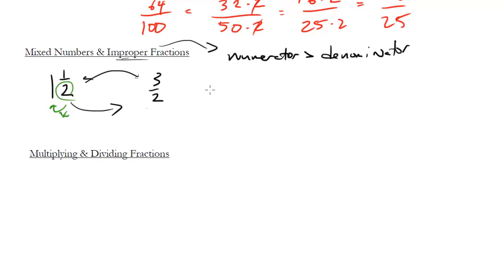How about another example? How about 6 and 2 thirds? Again, 3 times 6 is 18 and 18 plus 2 is 20 so we get 20 and we put it over the original 3 so we get 20 thirds.